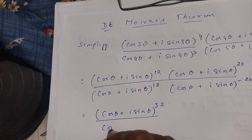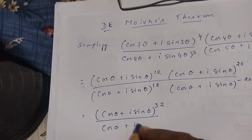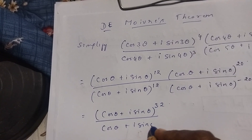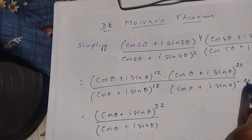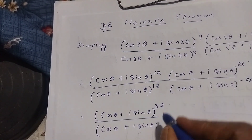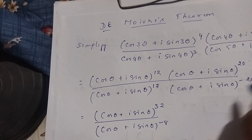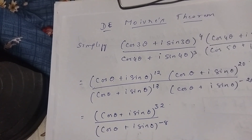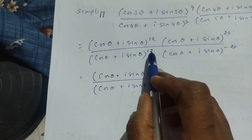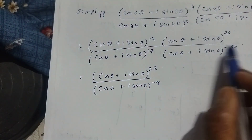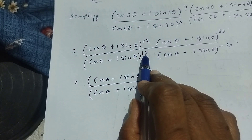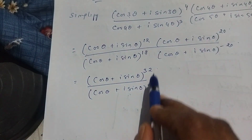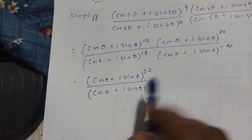Divided by — write one time cos θ + i sin θ. Now 12 minus 20 is minus 8. The big number is minus, so we put minus. This is plus 12 and minus 20, so 12 minus 20 gives 8, and the big number is minus, so it is minus 8.